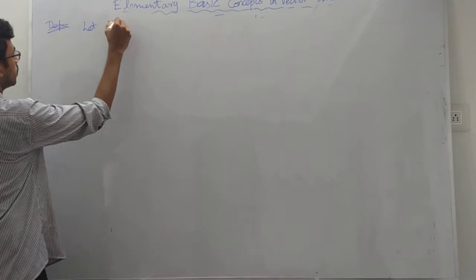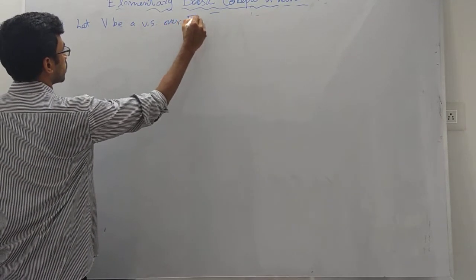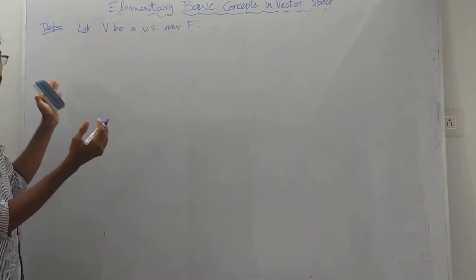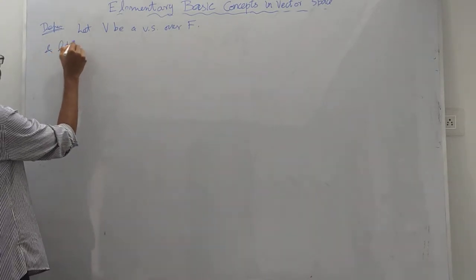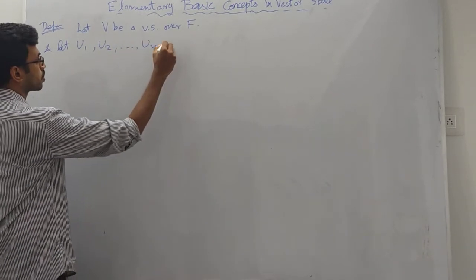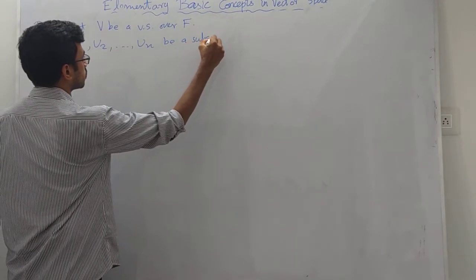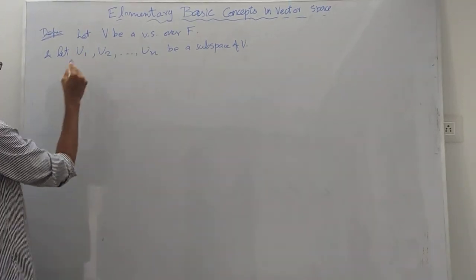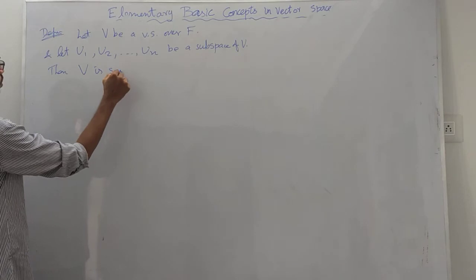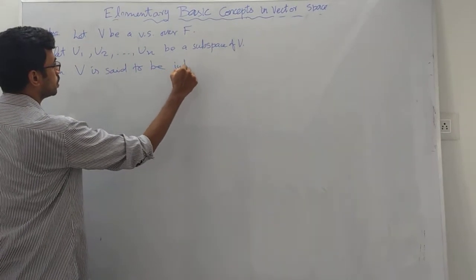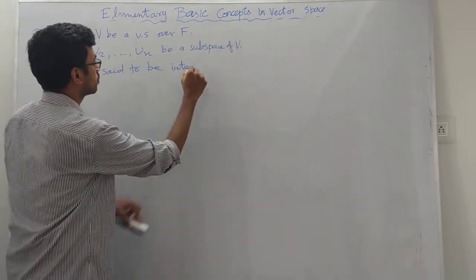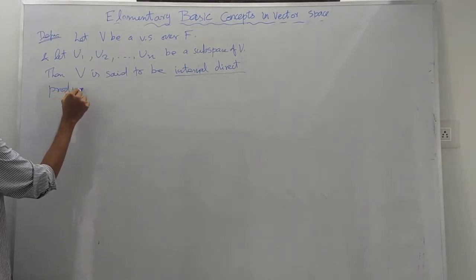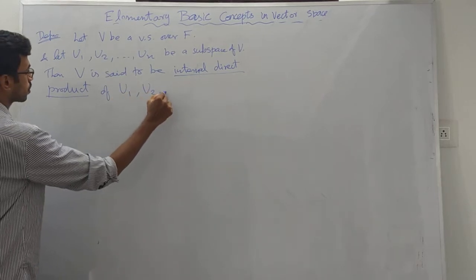Let V be a vector space over F. Then V is said to be the internal direct product of subspaces U1, U2, etc., UN.